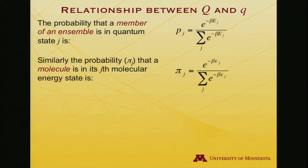Similarly, the probability pi, I'll use the Greek letter here for a molecule, so pi sub j, that a molecule is in its jth molecular energy state is given by a completely analogous formula. But instead of using a capital E for energy, I'll use a lowercase epsilon just to emphasize it's molecular, but it still has energy units.